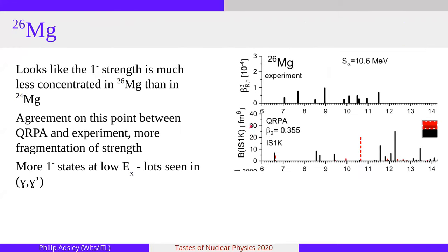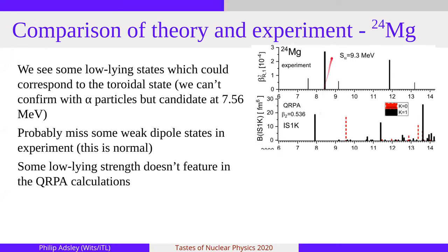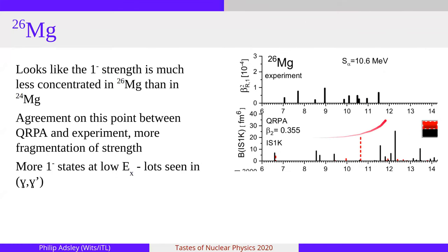In the case of magnesium-26, it looks like the dipole strength is less concentrated. And we think that this is because of the less well-defined prolate deformation in magnesium-26. And so the strength is more spread out. I would say there is qualitative agreement between the experimental distribution of the strength and the calculation if you compare the strong concentration in magnesium-24 to the rather more diffuse concentration in magnesium-26, there does seem to be some good agreement there. Many of the one minus states that we see in these data have also been seen in gamma ray inelastic scattering, done I think in Darmstadt.